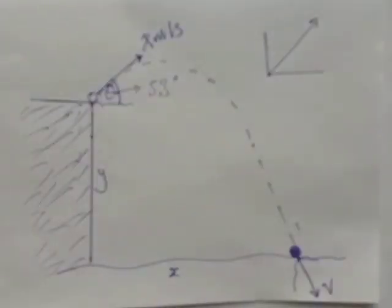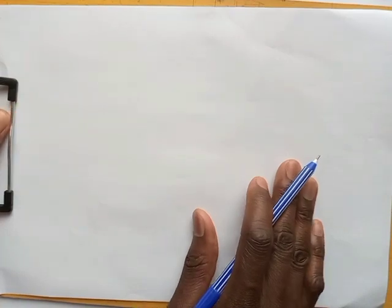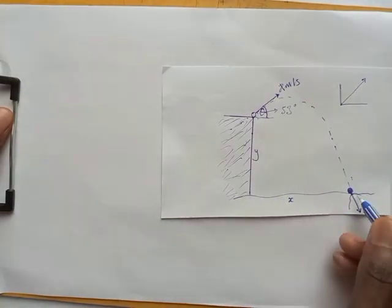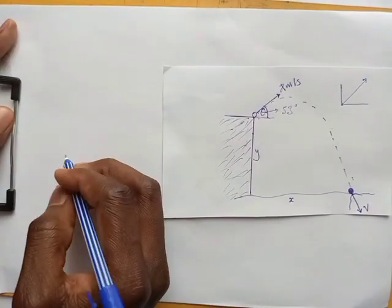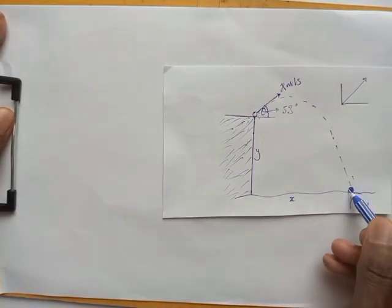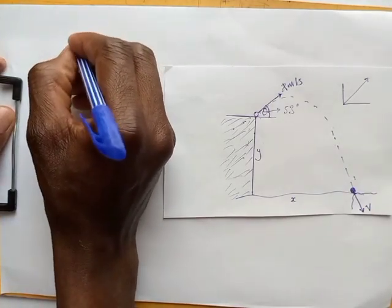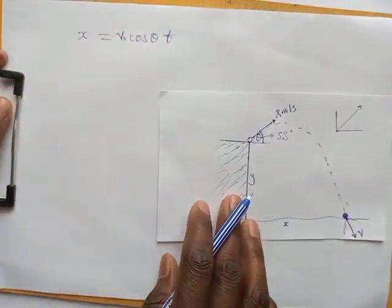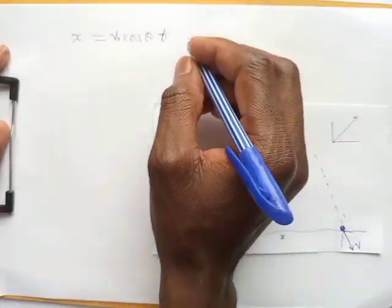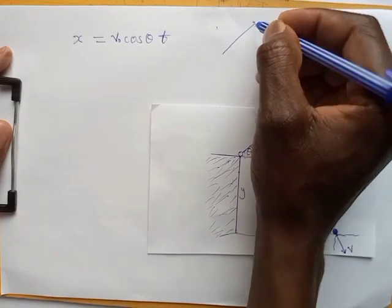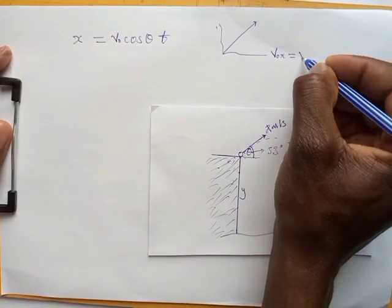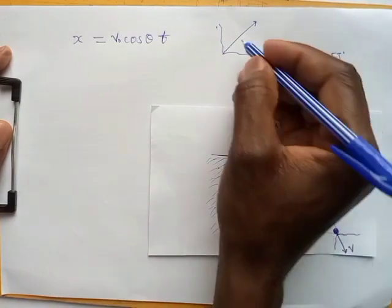To find the distance in x, we use the general expression for range: x = v_initial × cos(θ) × t. Before applying this, we need to resolve the initial velocity into components. The initial velocity in x is v_initial × cos(53°), and the initial velocity in y is v_initial × sin(53°).